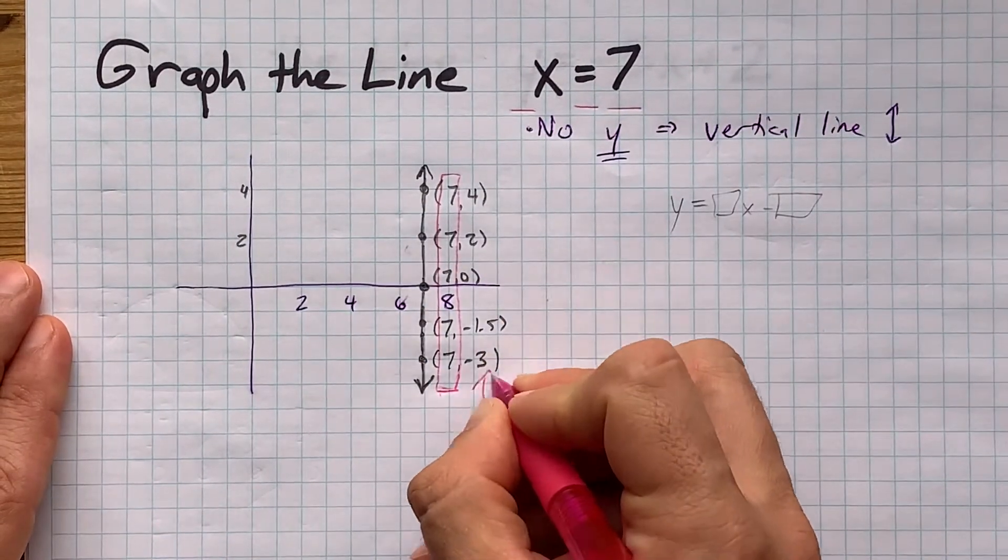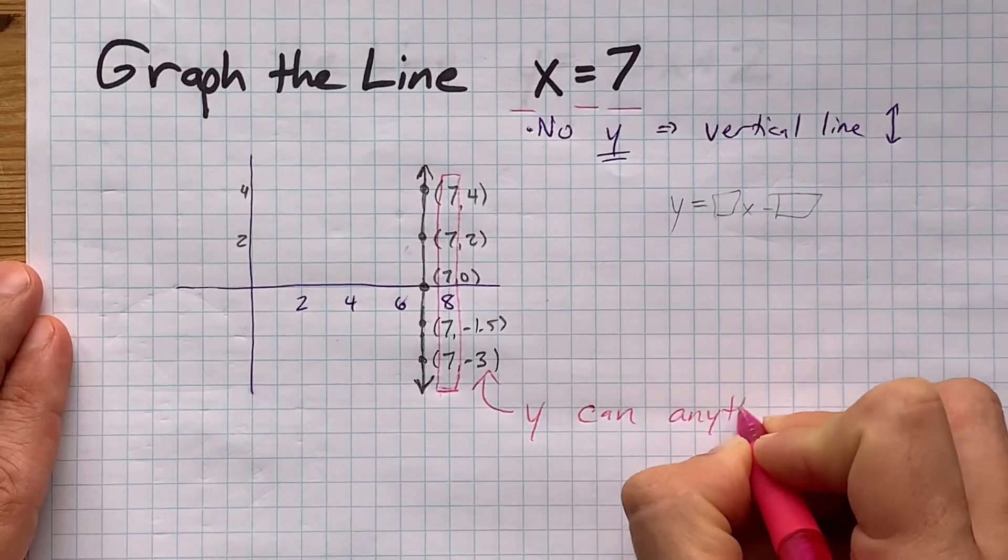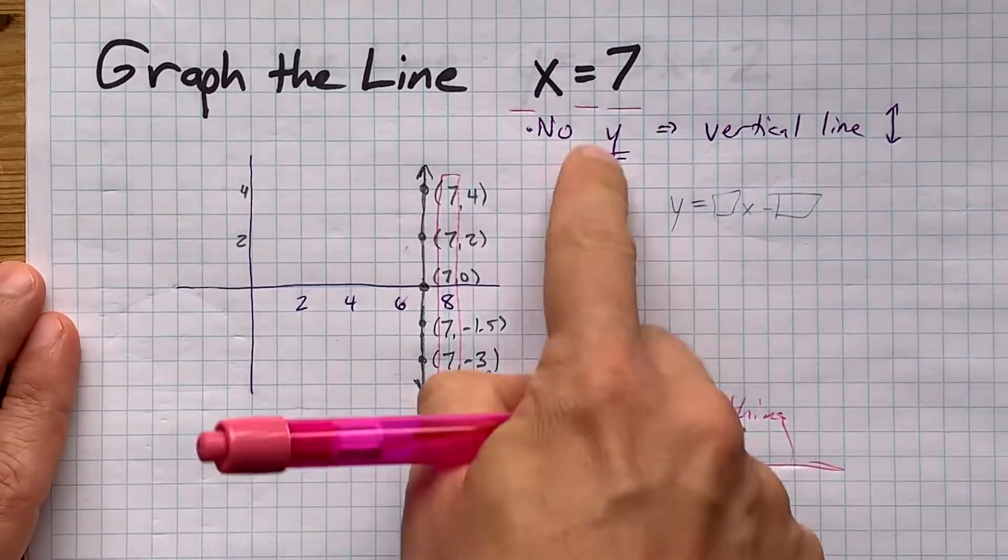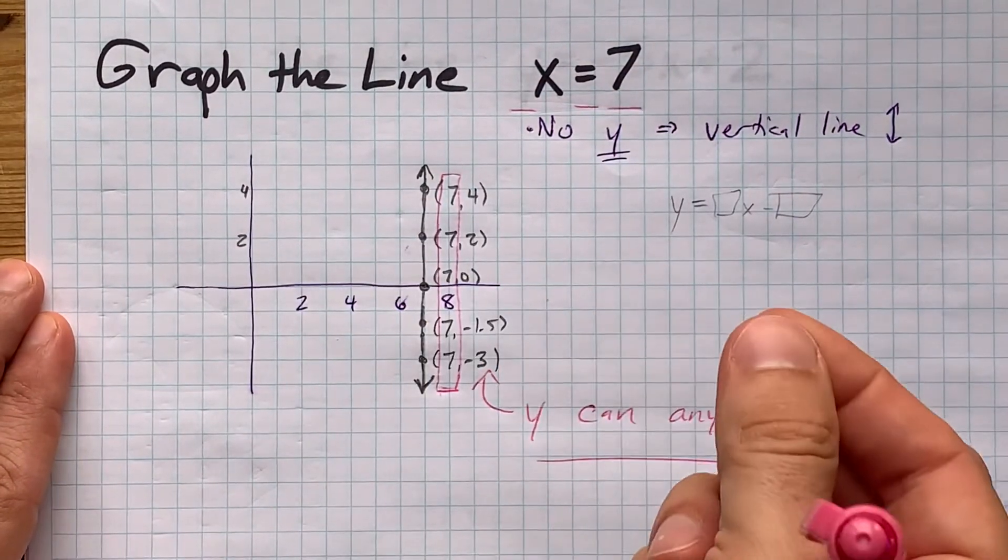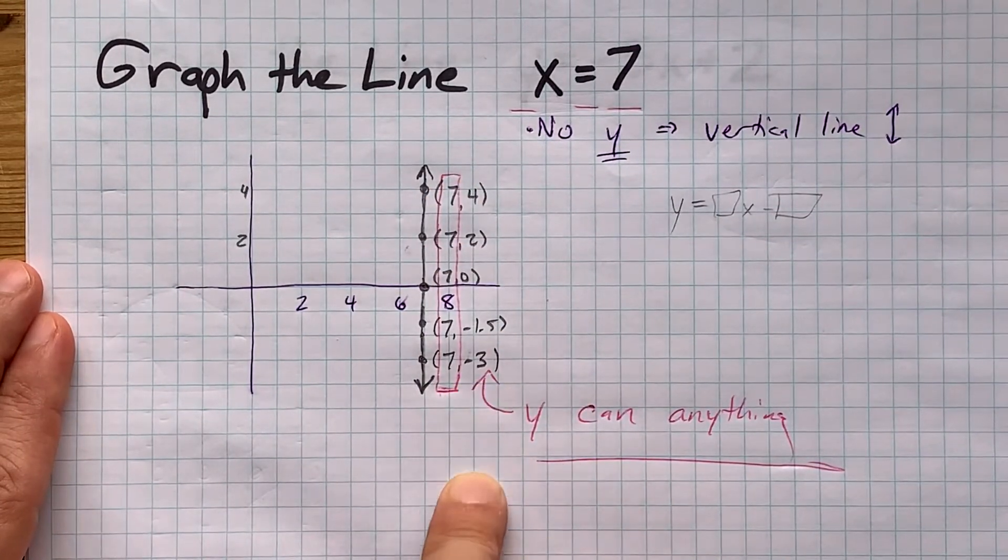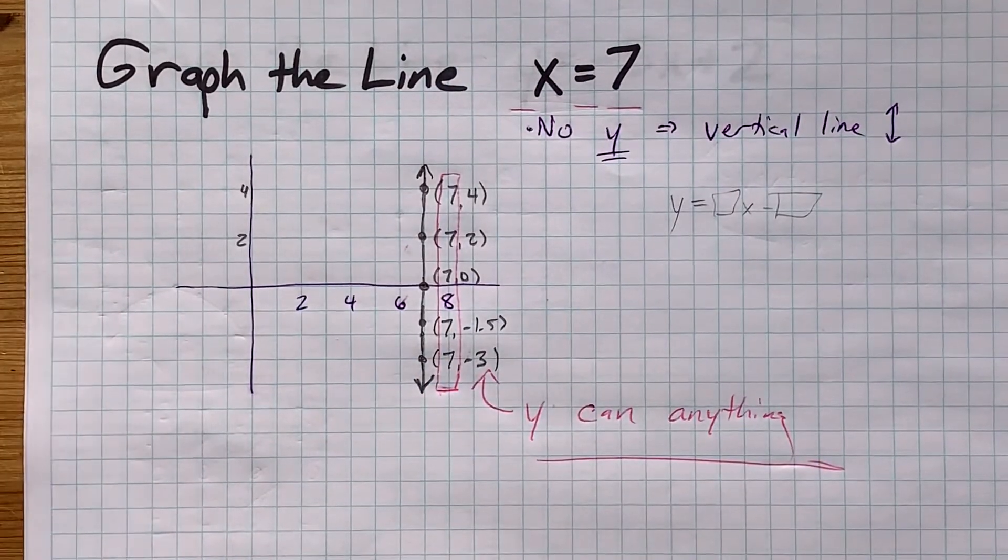But what can y be? y can be anything because there's no limitation put on it by the equation. There's nothing here in x equals 7 that tells you what y has to be. So y can be any of these numbers, and indeed they are - it goes down to negative a million, up to positive 5 billion, etc.